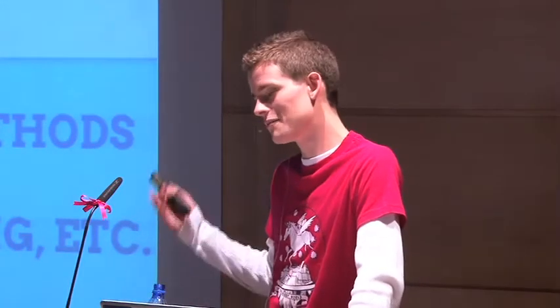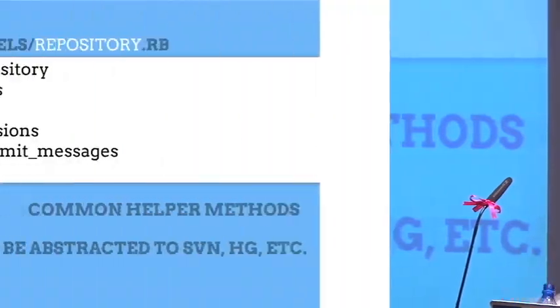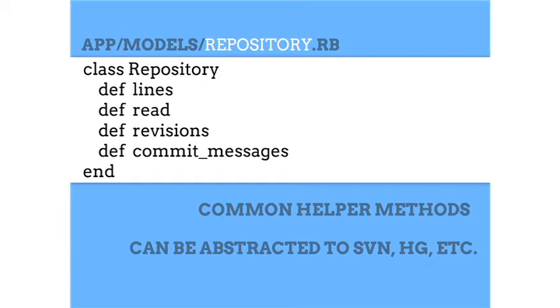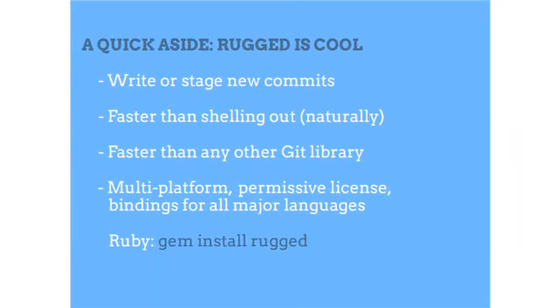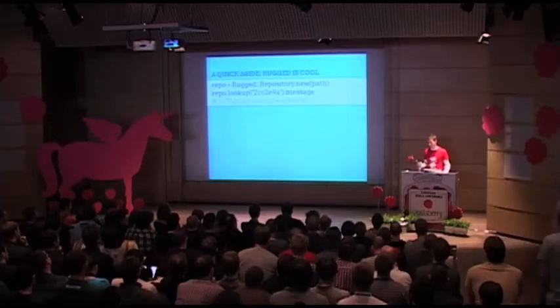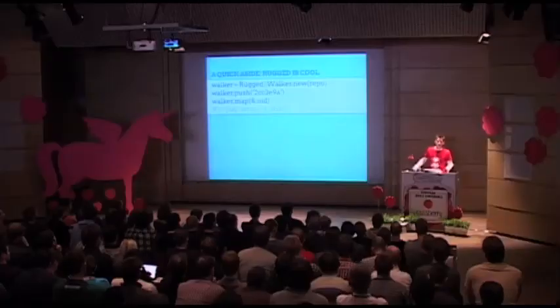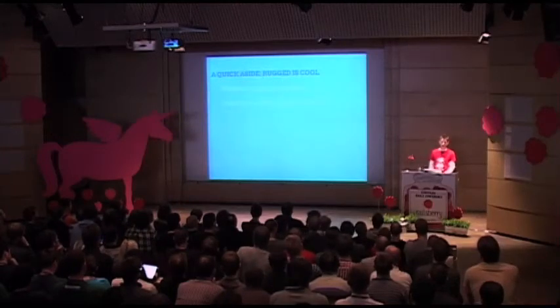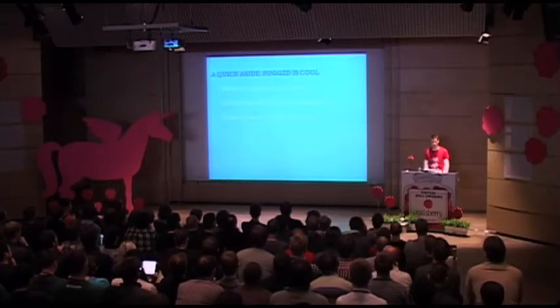There are a bunch of convenience methods to help you do the nitty-gritty of reading lines and revisions. Ideally I want to abstract this out to Subversion, Mercurial, all of that fun stuff. And a quick aside — Rugged is really awesome. If you're like me, you have about a million one-off Ruby scripts that all shell out to git. Shelling out is super slow, especially when you're doing it a couple million times. Using Rugged, you just require it, send it a path, and it'll look into that repository. You can look up a particular SHA and it'll return a message, traverse different trees, stage new commits — faster than shelling out. It's multi-platform, permissive license — `gem install rugged` — it's fun.